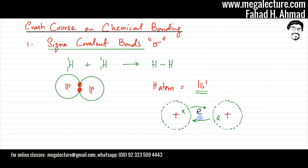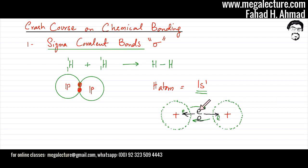Both nuclei are trying to gain those electrons. Since the force of attraction is equal, the two electrons get stuck somewhere in the middle — they can't go toward either hydrogen nucleus. So the electron density is very high in this middle region connecting the two nuclei. The atoms now form a bonding orbital.